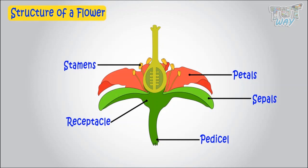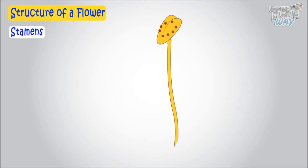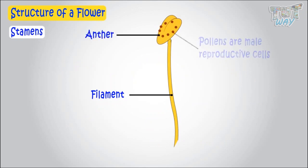Or carpel or pistil, which is female reproductive part. Stamen consists of a long stalk called filament and a swollen head called anther that consists of numerous very small pollens, which are male reproductive cells.